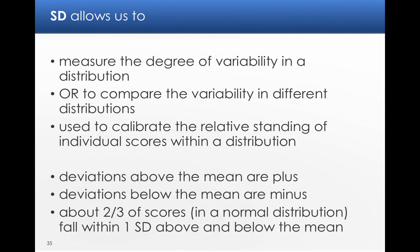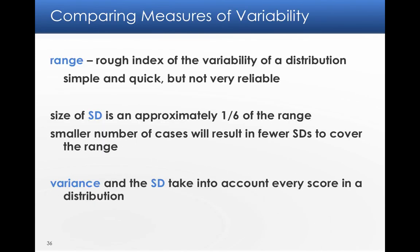So standard deviation allows us to do a few things. Measure the degree of variability in a distribution or compare the variability in different distributions. Deviations that are above the mean are plus, below the mean are minus. Now in a normal distribution, where it makes a bell curve, two-thirds of scores are going to be one standard deviation above and one standard deviation below the mean.